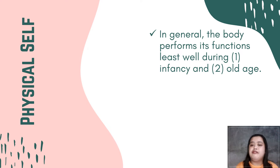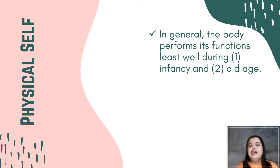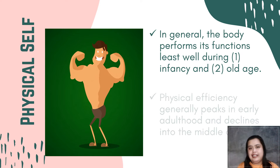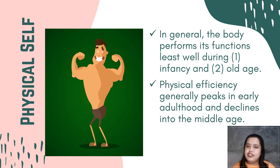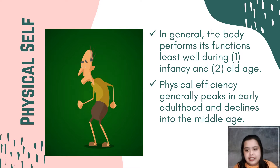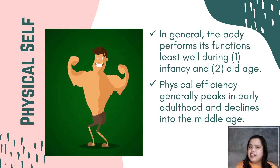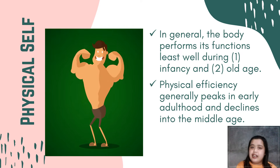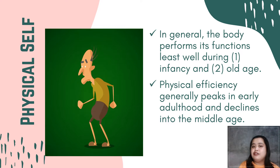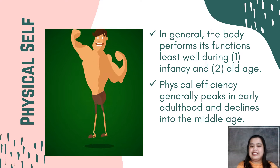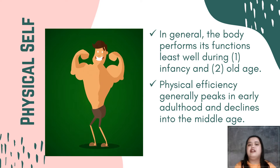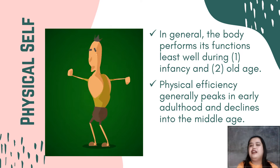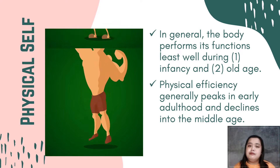When we're babies, the body hasn't yet fully developed its functions. And gradually, when we grow old, the body's ability to function well also decreases. Physical efficiency generally peaks in early adulthood and declines into middle age. So at our age, we're near that peak where the body can function well. Around middle age, it starts to decline — the body begins to go past the peak of its ability to perform its functions.